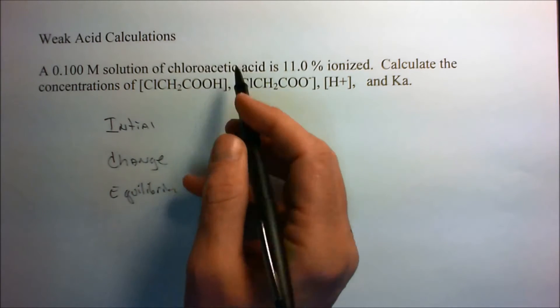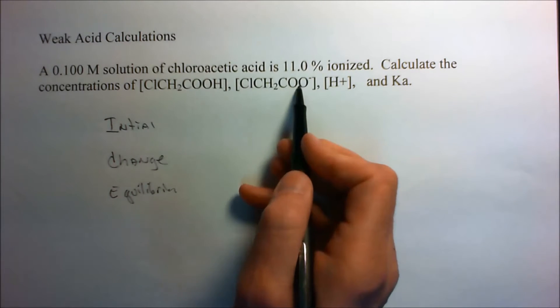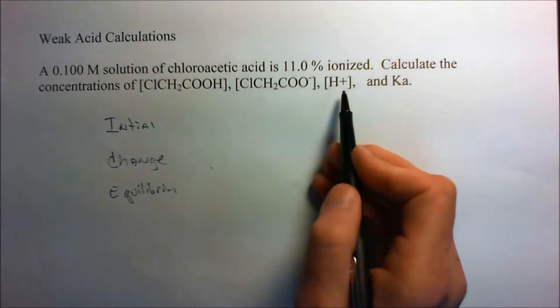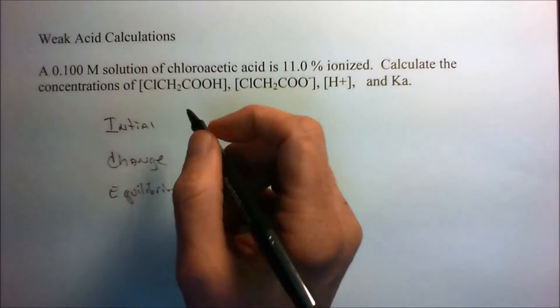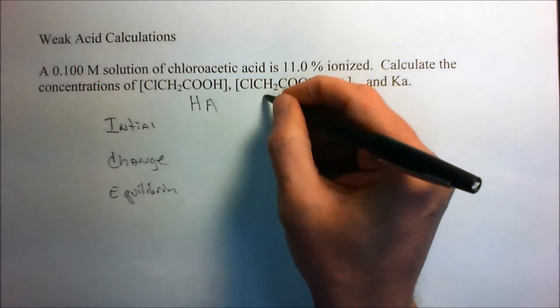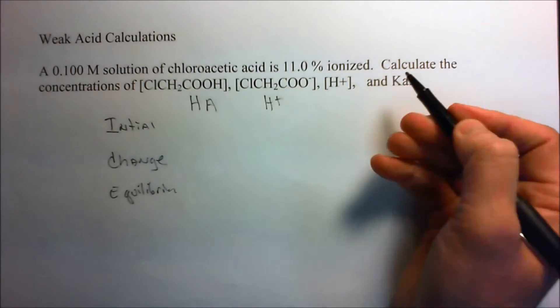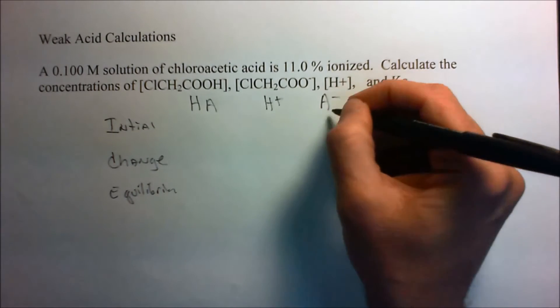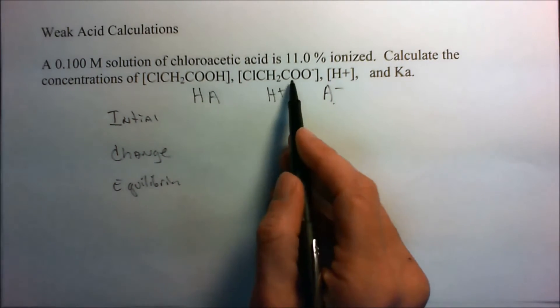And so we have the chloroacetic acid, the conjugate base, and H plus. I'm just going to write them down as being HA meaning the acid, H plus, and A minus being the conjugate base which is this guy right there.